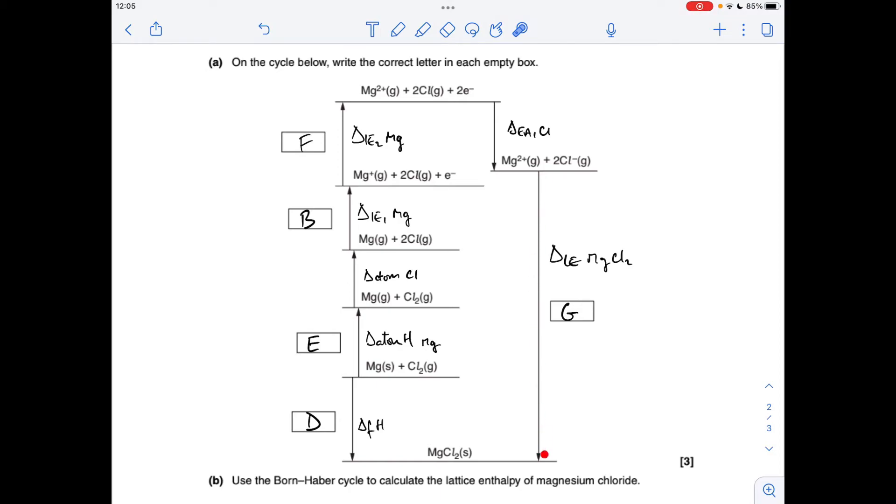And then the last one here, that's the lattice enthalpy, gaseous ions to solid lattice. So that was process G.